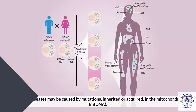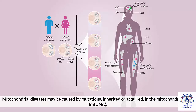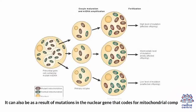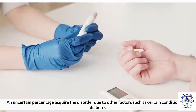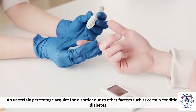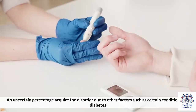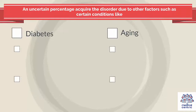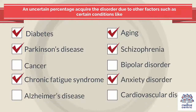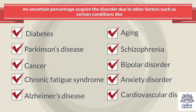Mitochondrial diseases may be caused by mutations, inherited or acquired, in the mitochondrial DNA (MT-DNA). It can also be as a result of mutations in the nuclear gene that codes for mitochondrial components. An uncertain percentage acquired the disorder due to other factors, such as certain conditions like diabetes, Parkinson's disease, cancer, chronic fatigue syndrome, Alzheimer's disease, aging, schizophrenia, bipolar disorder, anxiety disorder, and cardiovascular diseases.